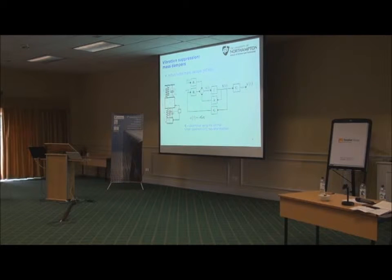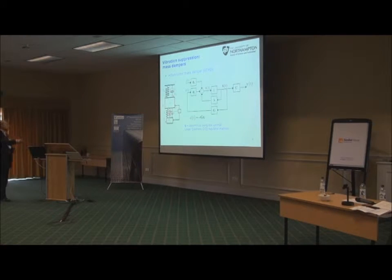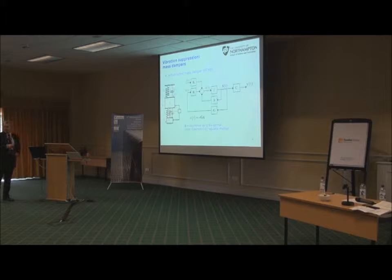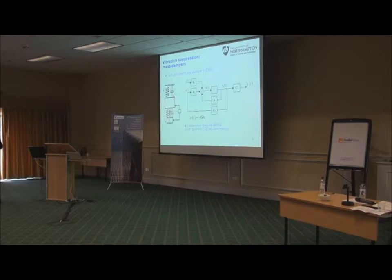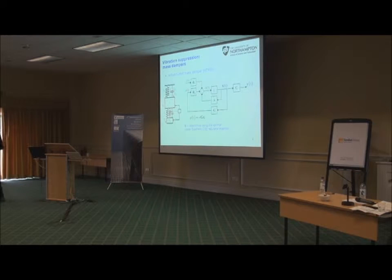To represent this arrangement in terms of mathematical symbols we can use this diagram. To implement an active system, we need an actuator generating force U. In addition, we have sensors: we measure the motion of the main mass we want to control, and also the motion of the additional mass — which we call the absorber. When we have those two measurements, we use a control algorithm to produce the force.